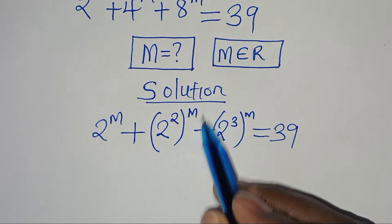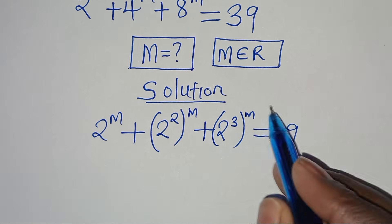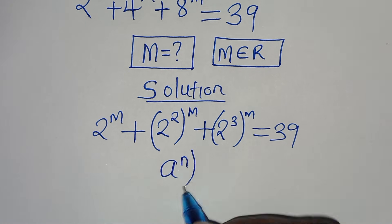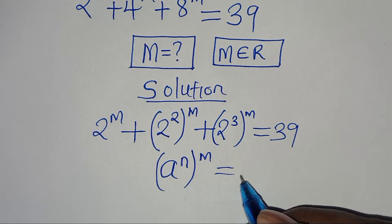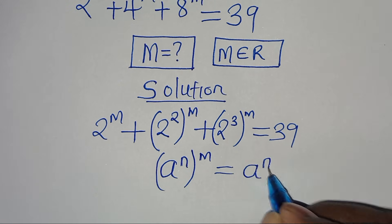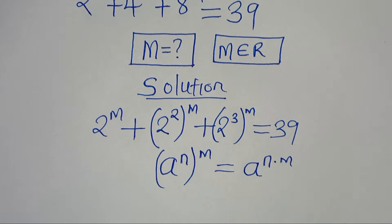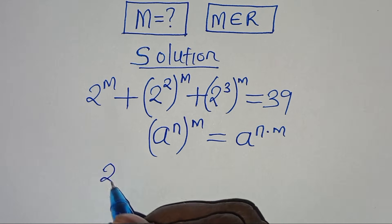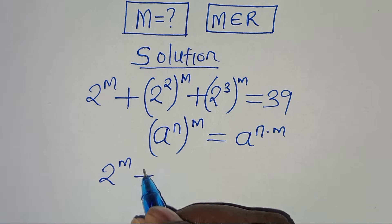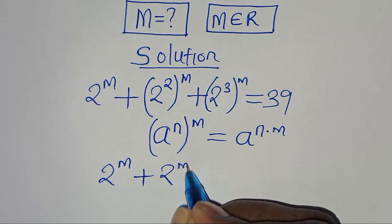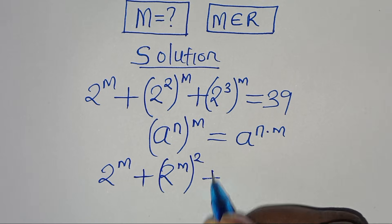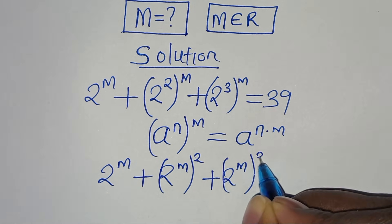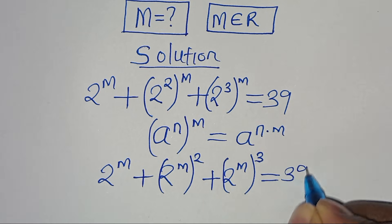Now 2 to the power of 2 to the power of m, and 2 to the power of 3 to the power of m, are in the form of a to the power of n raised to the power of m, which we can express as a to the power of n times m. Applying this exponent property, we have 2 to the power of m, plus 2 to the power of m raised to the power of 2, then plus 2 to the power of m raised to the power of 3, this is equal to 39.